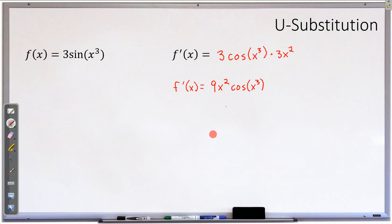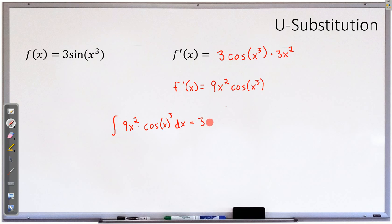Now, if you know a derivative, you know an anti-derivative. So that means the anti-derivative of 9x squared times cosine of x cubed is equal to 3 sine of x cubed plus c. Now, how do we go from point A to point B if we don't already know the answer? We know this has to be true because we started here, took the derivative, and we know we can go backwards. But if I was only given this integral, how could I find the answer?